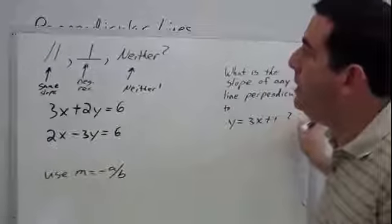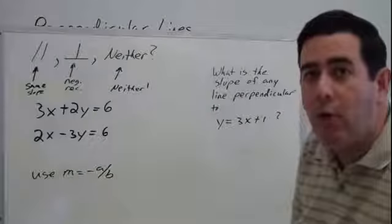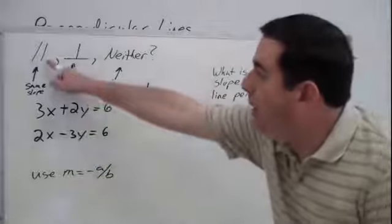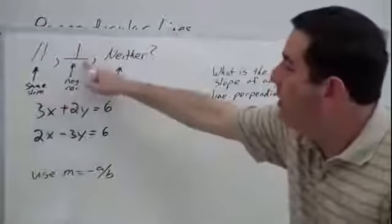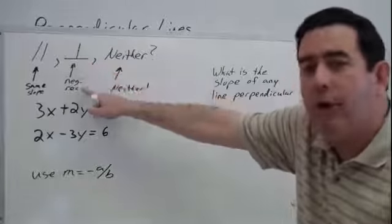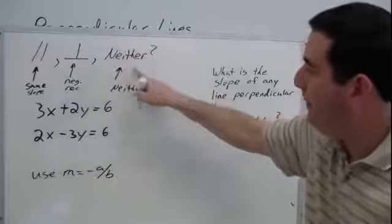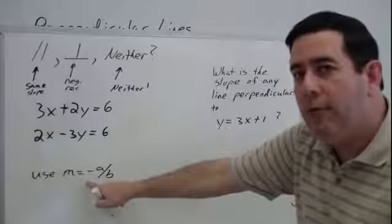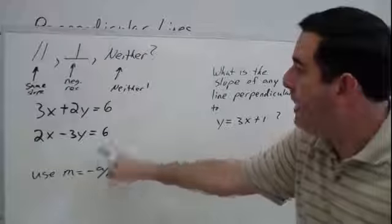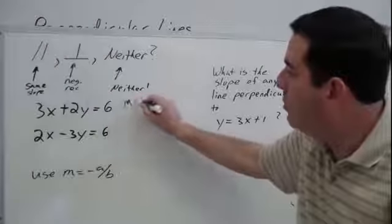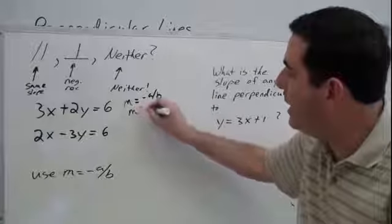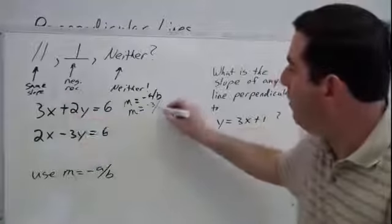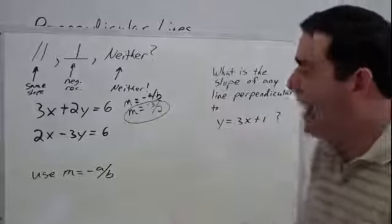One thing you may be asked to do is decide if two lines are parallel, perpendicular, or neither. To decide that, we need to know the slope. For parallel lines, they have to have the same slope; for perpendicular lines, they have negative reciprocal slopes; and if neither condition is met, then it's neither. Here I've got two lines in standard form, so I'll use negative a over b to find the slope for each. For the top equation: opposite of the coefficient of x gives negative 3, divided by the coefficient of y — that gives negative 3 halves for the slope.